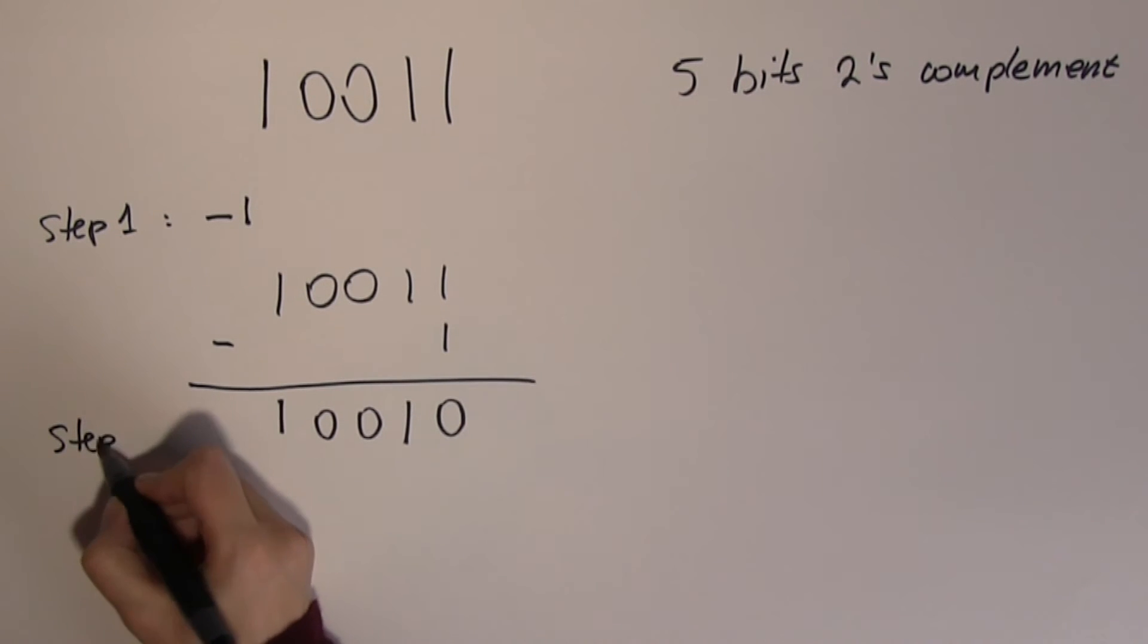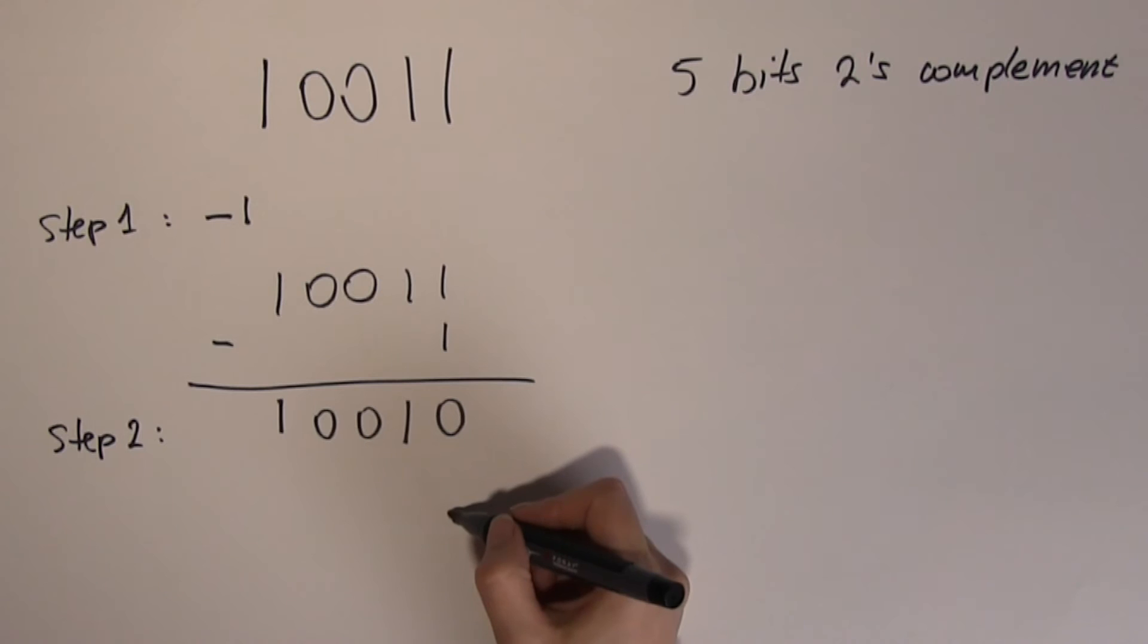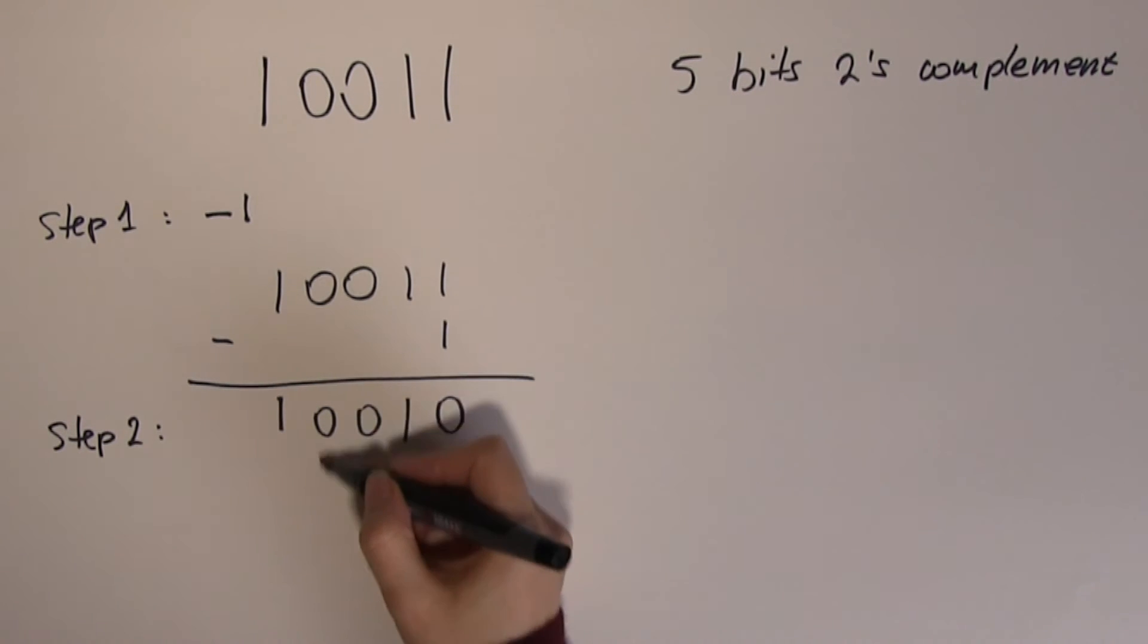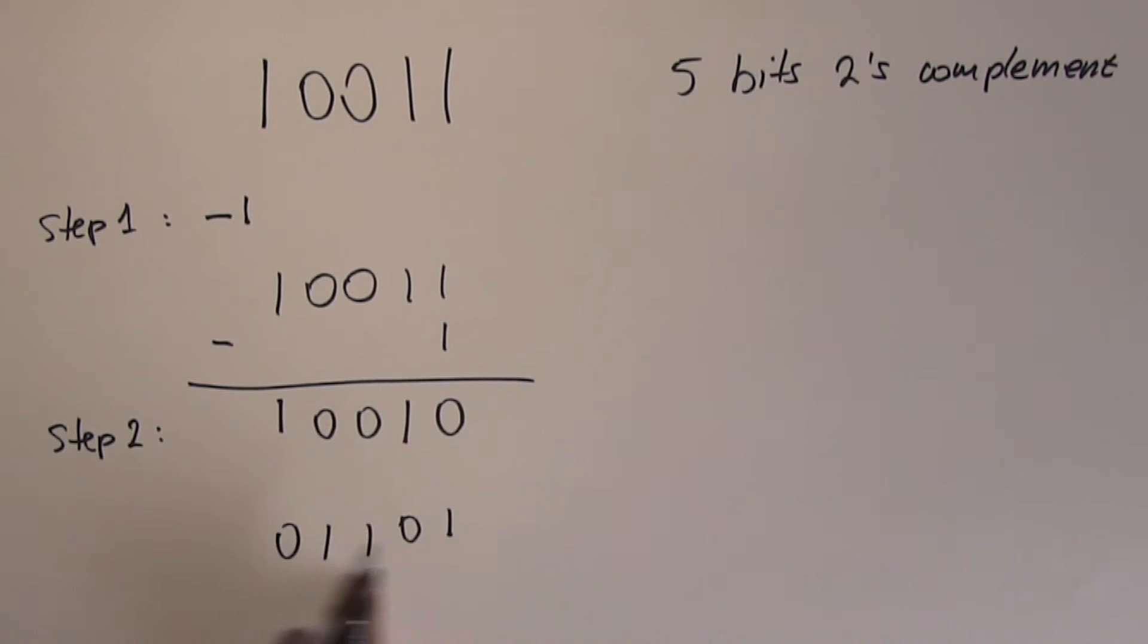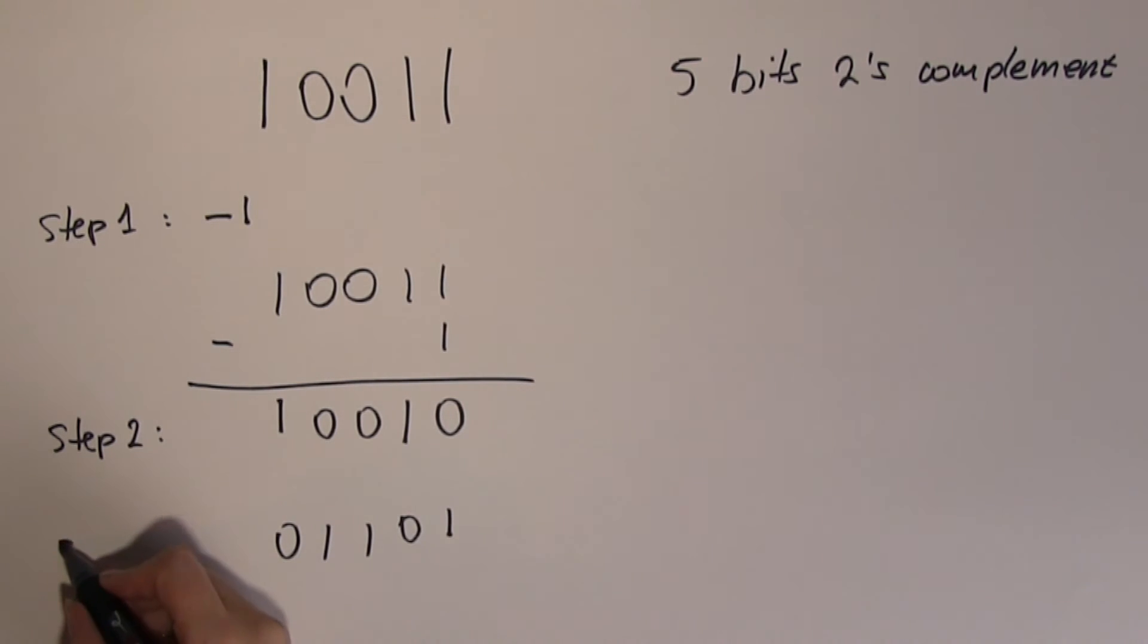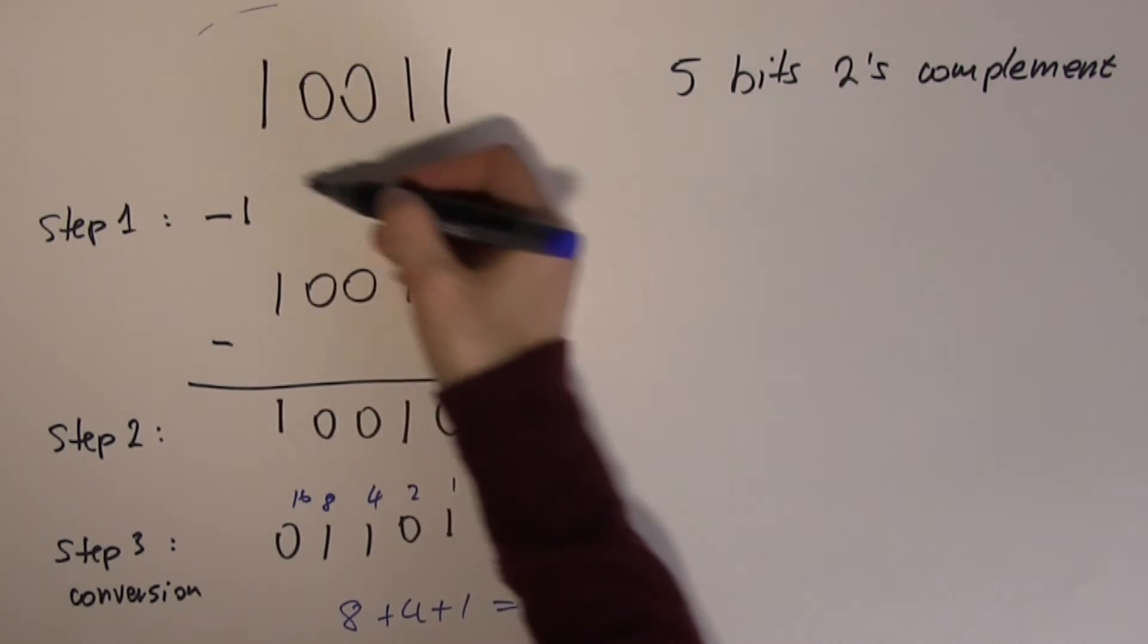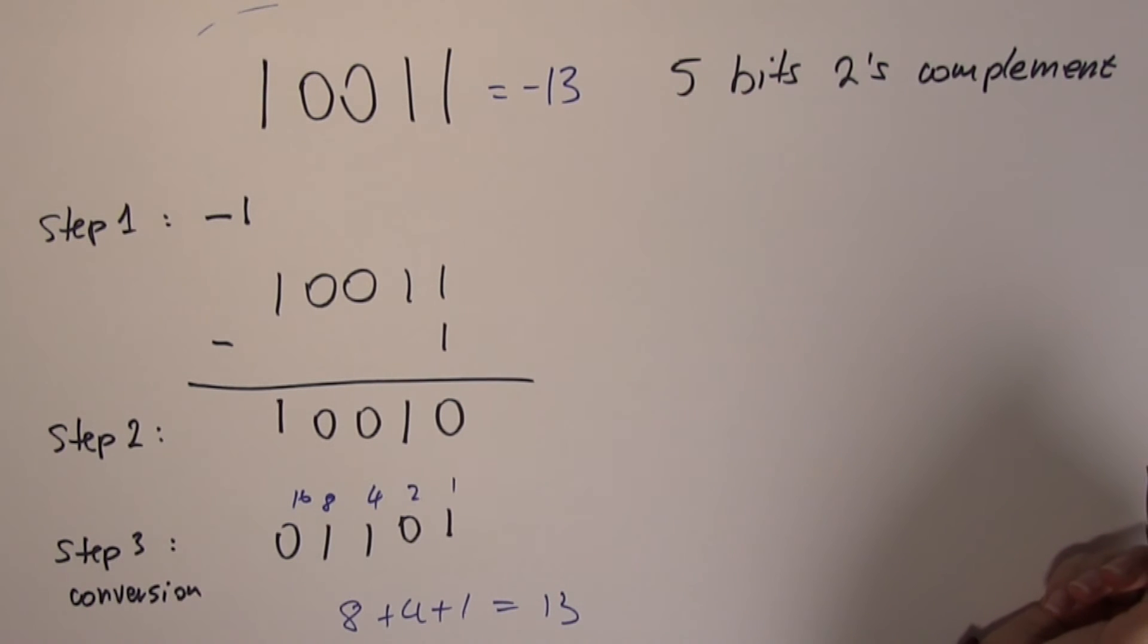Remember that the middle step was the inversion. What I need to do now, I need to invert this number. 0 becomes 1, 1 becomes 0, 0 becomes 1, 0 becomes 1, and 1 becomes 0. This is the ordinary binary equivalent of this 5-bits 2's complement. Now I can do the last step, which in this case will be the conversion. Just put the place values on top of the number. 8 plus 4 plus 1 makes 13. So this number is the equivalent as minus 13. We have done this conversion in the previous video, so you can double check there and convince yourself that this is a correct way of doing it.